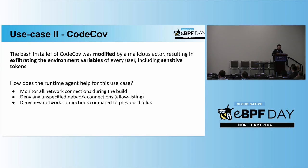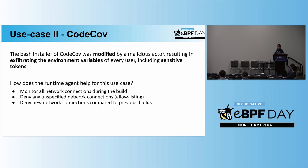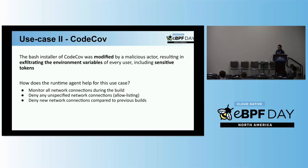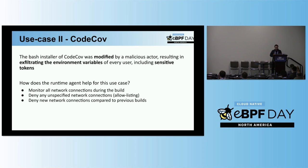How could we help with this case? First, the most naive and simple solution would be to monitor all the network connections that builds are doing. They are quite repetitive and don't have to access hundreds of domains or IPs — the list should be quite simple. A more advanced solution would be to create an allowlist: any process that connects to an IP or domain not in the database should be terminated immediately.